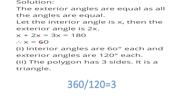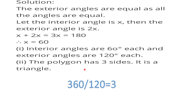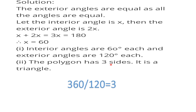The interior angle is 60 degrees and the exterior angle is 120 degrees. To find the number of sides of the polygon, the sum of exterior angles is 360 degrees. Dividing 360 by 120 gives 3 sides — this polygon is a triangle.